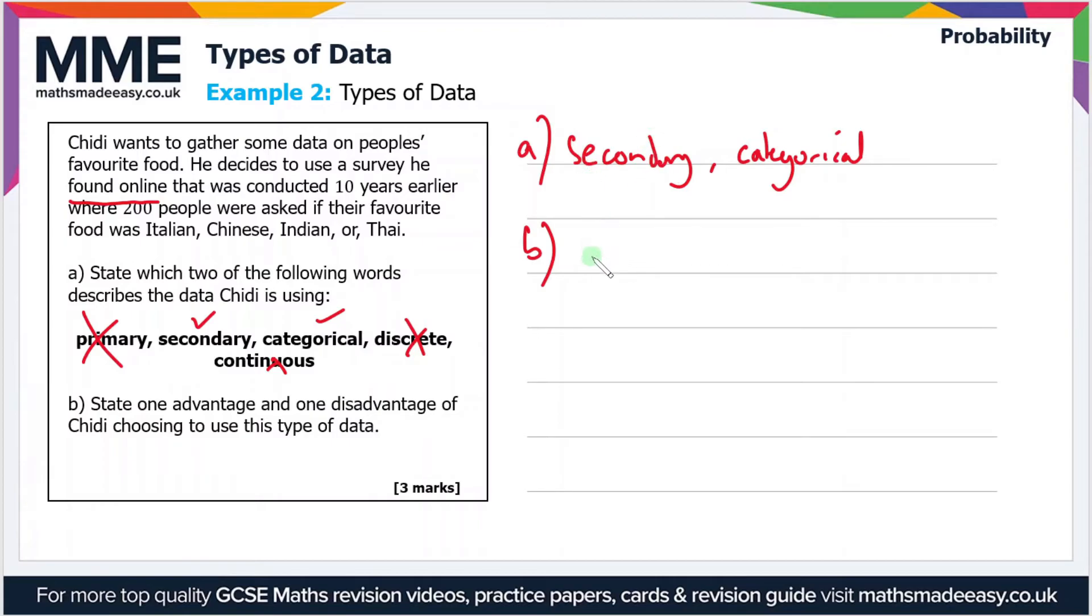So let's just say it's less time consuming. So that's one advantage. One disadvantage though is that it might not be reliable. So if the survey is 10 years old, then it might be outdated.